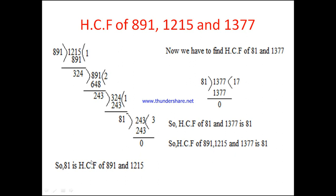With the solution 81 from the first pair, we now find the HCF of 81 and 1377. In a single step we get remainder 0, so the divisor is the solution. Therefore 81 is the HCF of 891, 1215, and 1377. Likewise, we can find the HCF of 3, 4, or 5 numbers using this method.